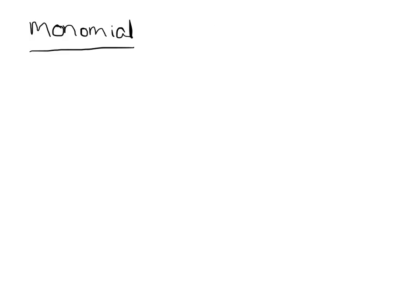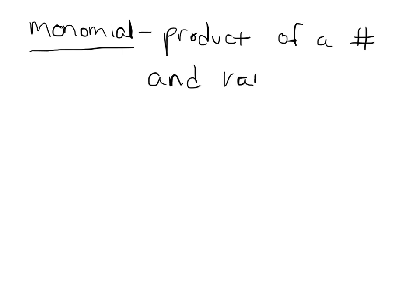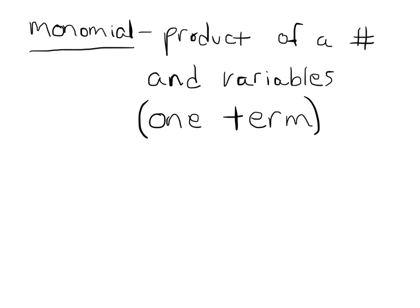Let's review what a monomial is. Think about it right now — if you had to write what a monomial is, what would you say? A monomial is basically the product, so multiplication, of a number and variables. Basically, it's just one term. An example would be something like 4xy squared — that's just one term.